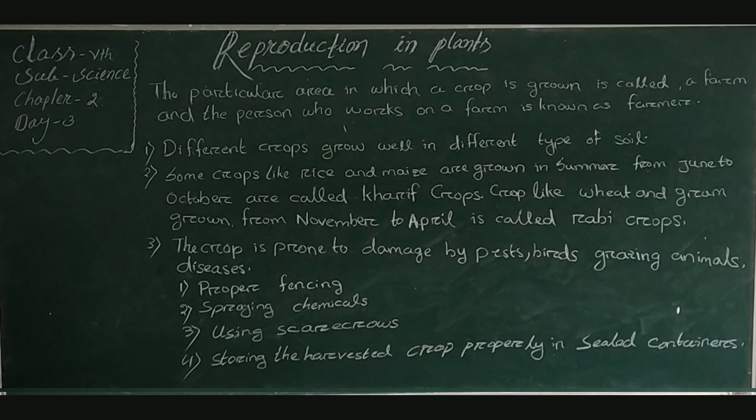Third, different crops grow in different seasons. For example, some crops like rice and maize are grown in summer from June to October; these are called Kharif crops. Crops like wheat and gram are grown in winter from November to April and are called Rabi crops. It is important to sow the right seed in the right season, and the crop growing in a field should be properly watered; otherwise, the crop may dry and die.